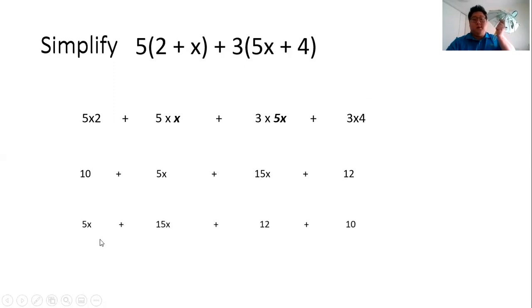Our next line, we are going to rearrange our x's together and our numbers, which are 12 and 10 together, and then 15 or 5 plus 15x and then 12 plus 10. So 5x plus 15x gives us 20x plus 12 plus 10 gives us 22, and that is our answer.